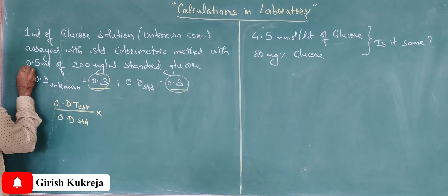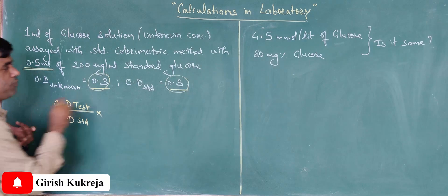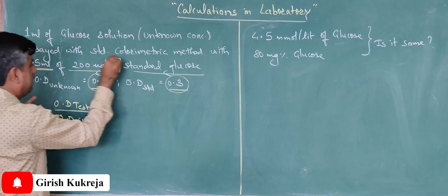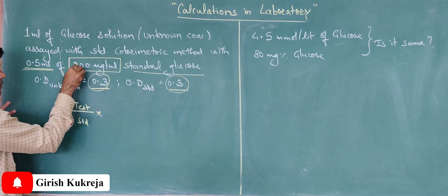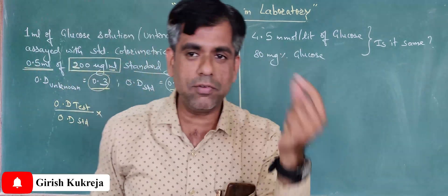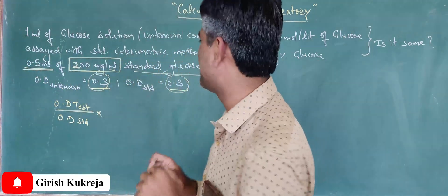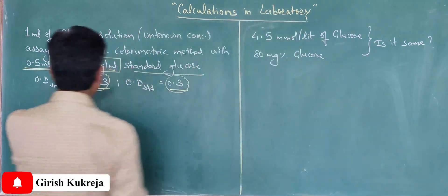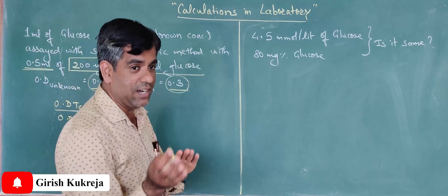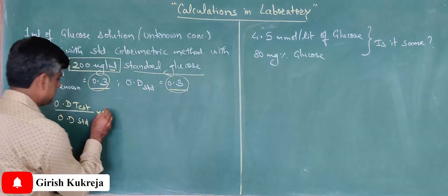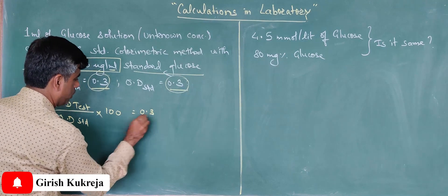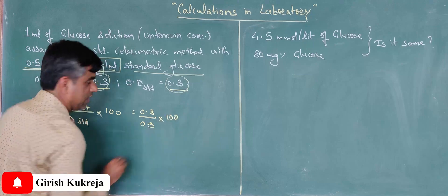Now OD of test and standard seem to be the same, but here we need to take into account that we have taken only 0.5 ml of your standard glucose. So the standard glucose was no doubt 200 micrograms per ml—in 1 ml there were 200 micrograms. Now I'm taking 0.5, so it's half of that, so it is 100. Remember, when I'm talking about concentration of the standard, since I have taken only 0.5 of that, it is 100.